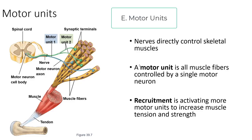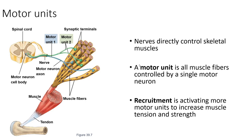The entire muscle does not need to flex at once. A bunch of nerves directly control skeletal muscles via motor units — a motor unit is all the muscle fibers controlled by a single motor neuron. If you want to pick up a penny, you recruit several motor units. If you're going to pick up a barbell, you recruit more motor units because the barbell weighs more and you need more muscle fibers. Recruitment is activating more motor units to increase muscle tension and strength.